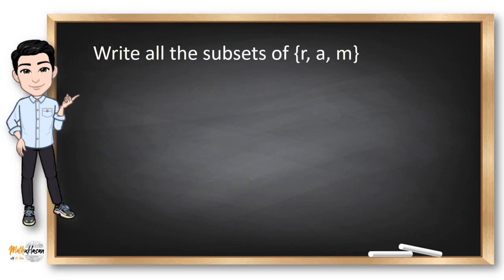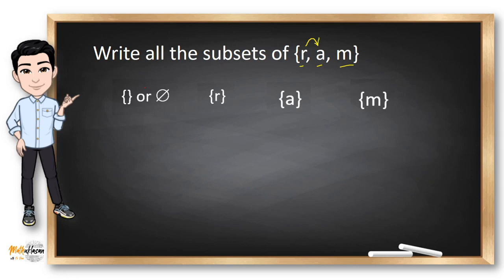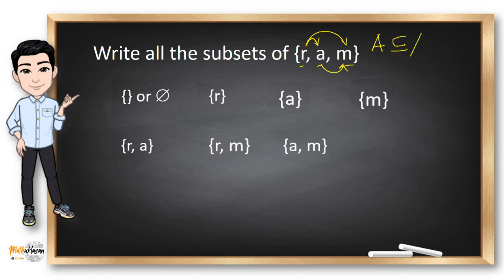Let's look at this example: write all the possible subsets of a set containing R, A and M. I'll start with the obvious choice — the empty or null set, because any set has this subset. Then I write the set for each element. Then I make combinations of sets with two elements: A and R, then R and M, then A and M. And of course, the last subset is the set itself. So here we have eight possible subsets for the given.